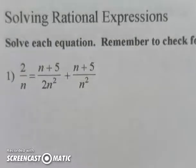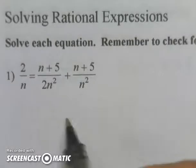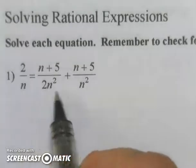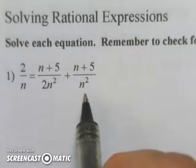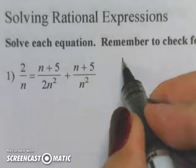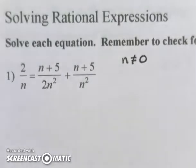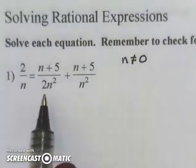Once all my denominators are exactly the same, then I don't need to worry about them anymore. The one thing I do need to notice is that my n cannot be zero. I need to make sure I remember, so I'm going to write n cannot be zero, because I cannot have zero as the denominator.